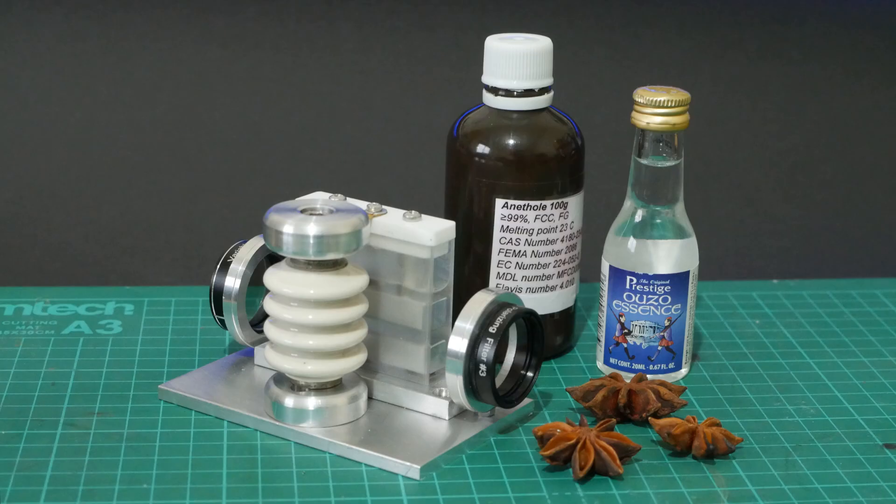Using anethole as a Kerr liquid has worked out really quite well indeed, with a clearly observable Kerr effect that is prominent enough to be useful for other experiments. Being a safe substitute for nitrobenzene is a huge bonus. It might be interesting to attempt to purify the anethole to see if there's any improvements in performance and perhaps build a high speed driver to see how fast the cell can be operated.